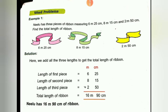Nilu had three pieces of ribbon measuring six meter and five centimeter, eight meter and fifteen centimeter, and two meter and fifty centimeter. We have to find the total length of the ribbon.